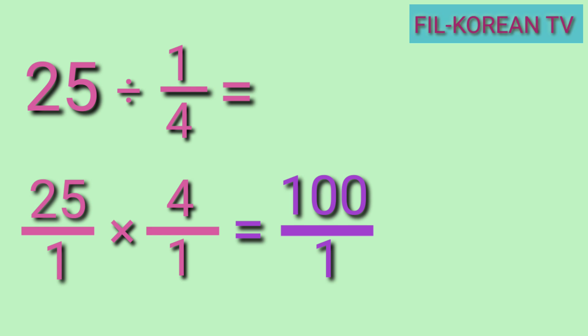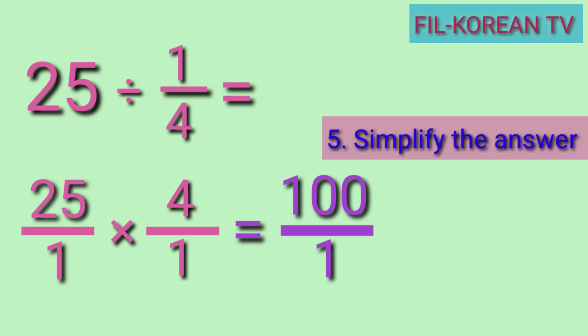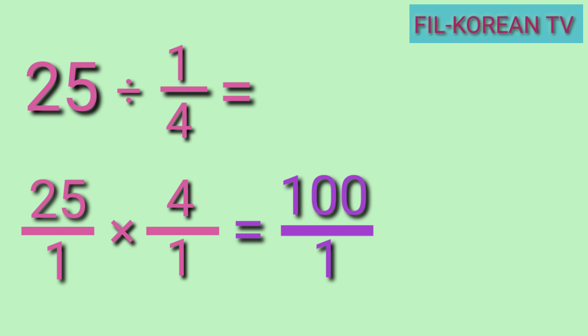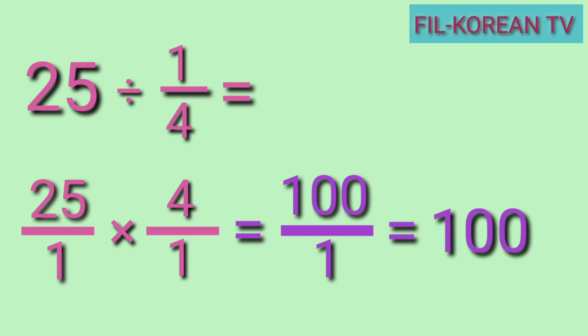It's an improper fraction, so we need to simplify it by dividing the numerator by the denominator. If we divide 100 by 1, of course the answer is 100. So the final answer is 100.